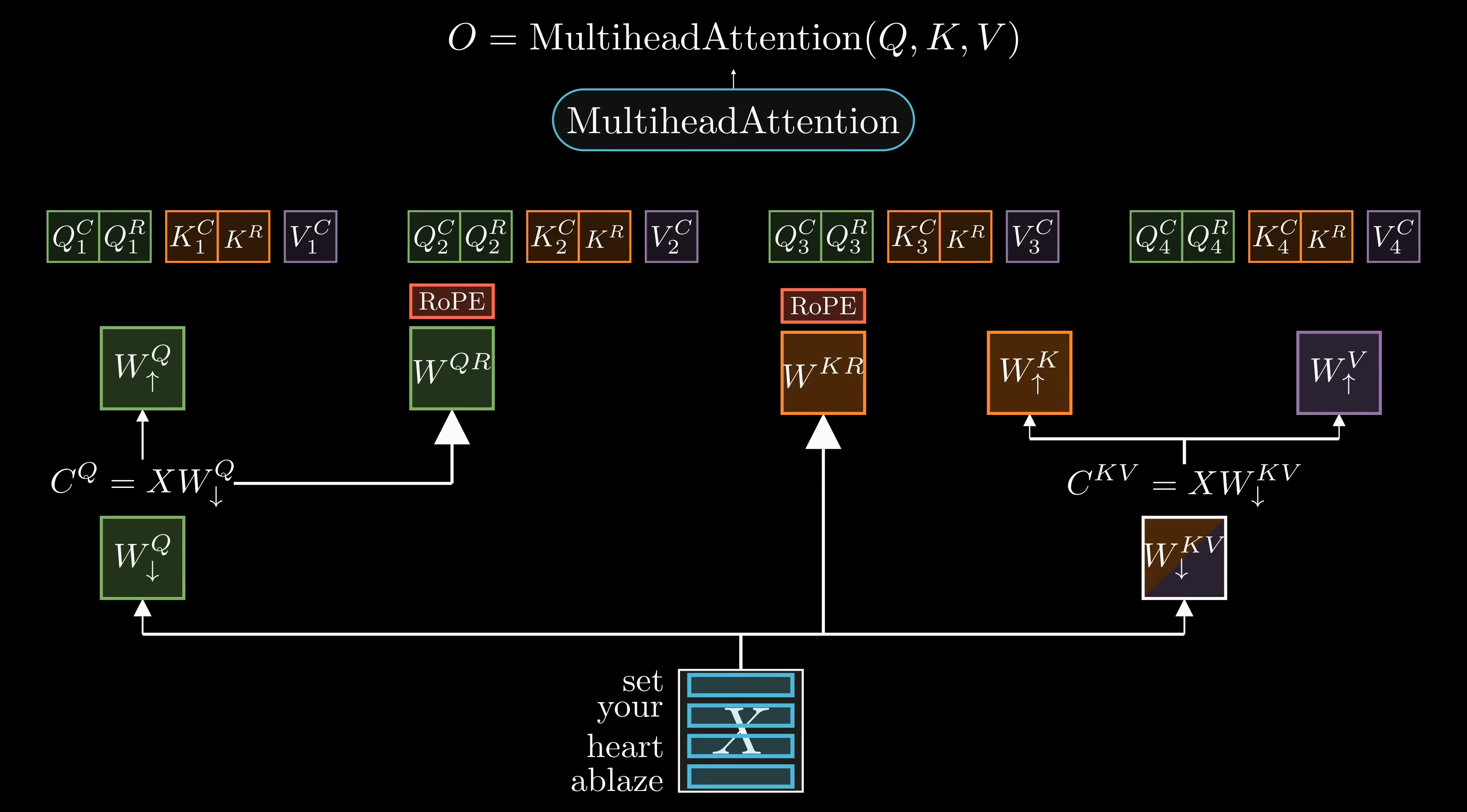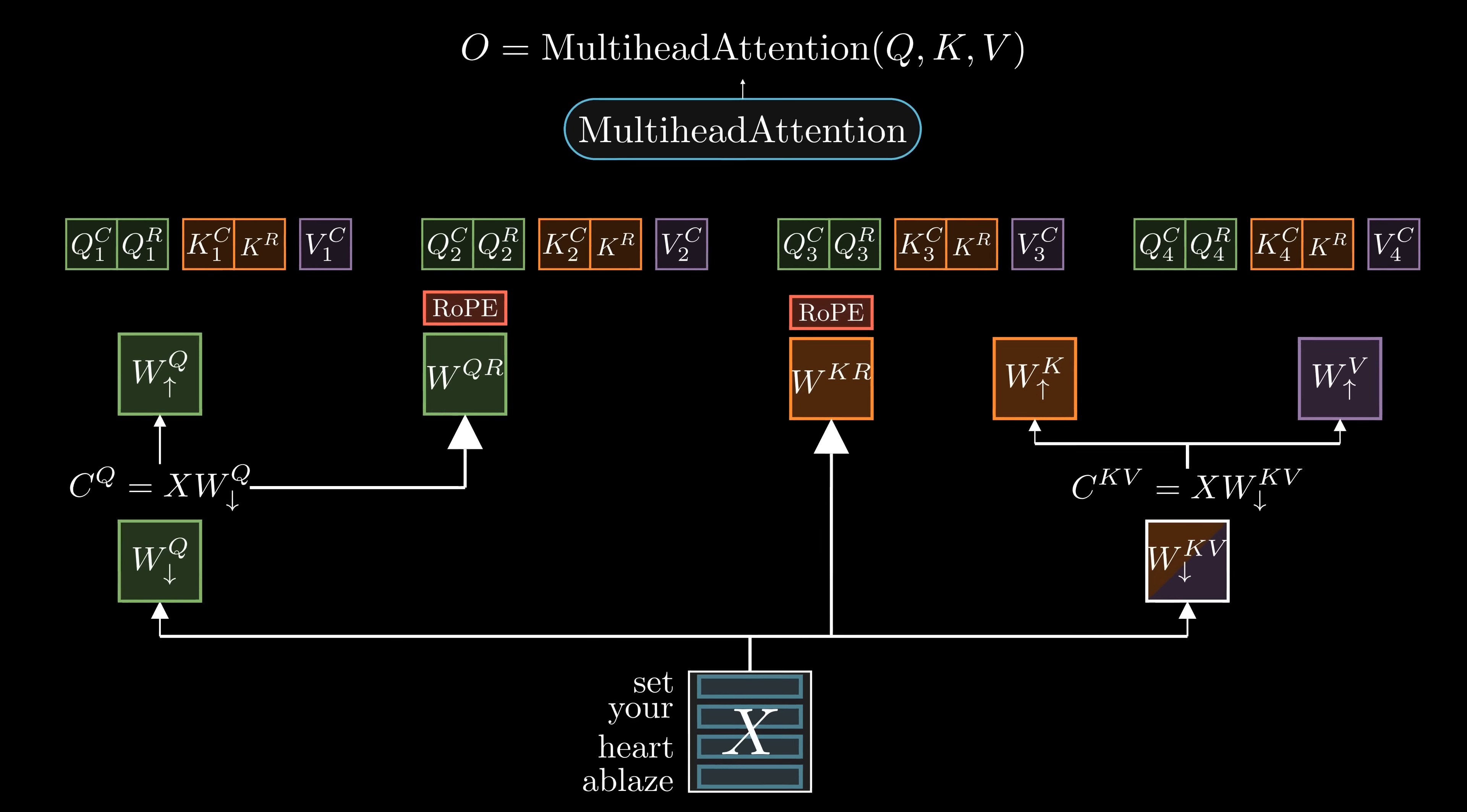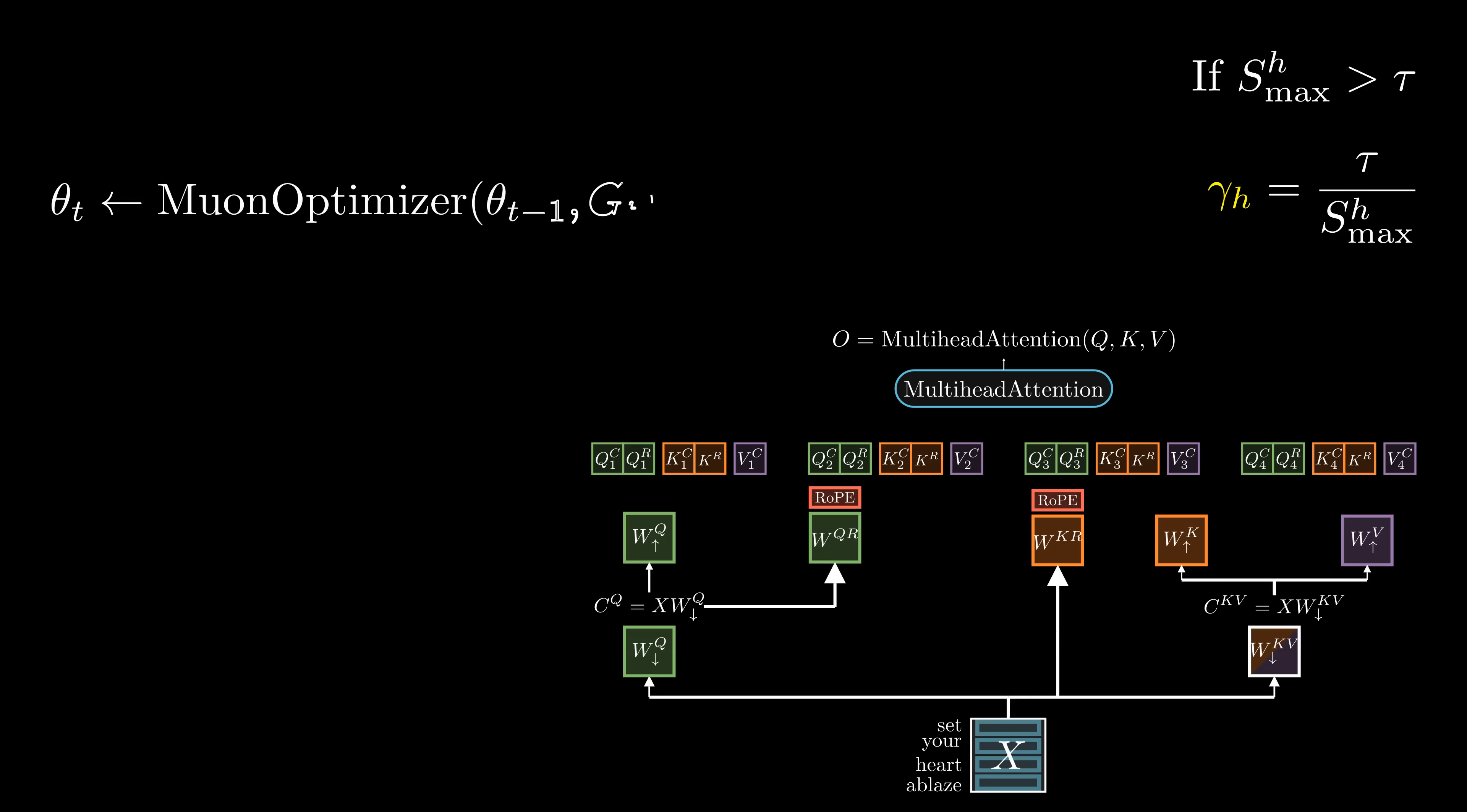When using multi-head latent attention, we need to carefully decide how to rescale these four matrices. For the up-projection matrix, we rescale the parameters for each head individually. The rope component deserves special attention. In this setup, each head has its own rotary query, WQR, but all heads share a single rotary key matrix, WKR. If we were to apply the same per-head scaling for both, the shared WKR matrix would be rescaled multiple times, which is undesirable. To handle this properly, we rescale only the head-specific rotary queries, WQR, by their respective gamma h, while leaving the shared rotary key matrix, WKR, unchanged.